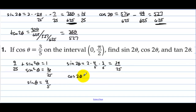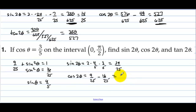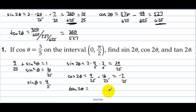Cosine of 2 theta equals cosine squared minus sine squared, which is 9/25 minus 16/25, equal to negative 7/25. Tangent of the double angle equals sine over cosine, which is negative 24/7.